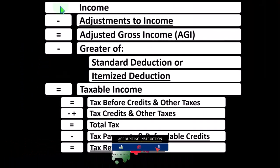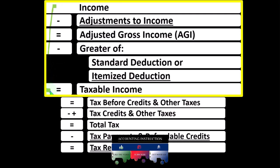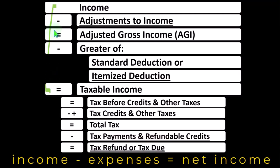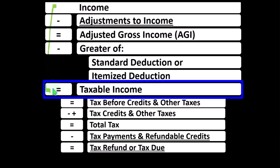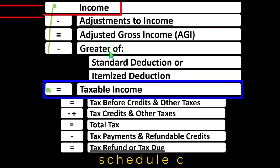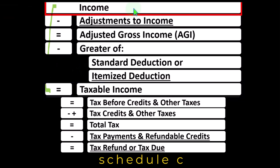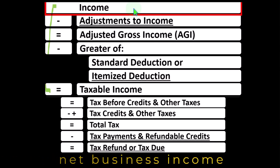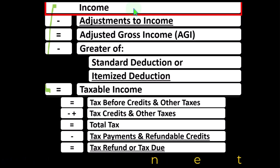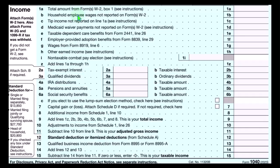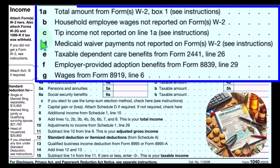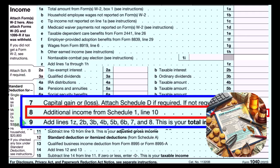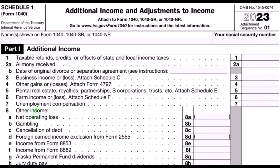Looking at the income tax formula — the first half is basically a funny income statement. Most income statements have income minus expenses resulting in net income. Here we have income minus various deductions resulting in taxable income. The sole proprietorship Schedule C rolls into line one income of the formula. Schedule C itself is also in essence an income statement having business income minus business expenses, resulting in net business income, which rolls into line one income of the formula. The formula represents the calculation on Form 1040.